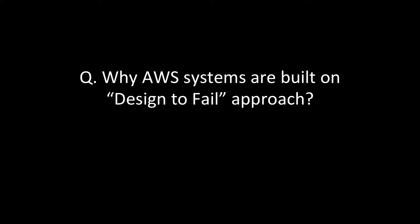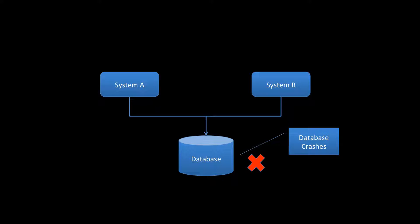One popular question is: why are AWS systems built on a design-to-fail approach? To understand the design-to-fail principle, consider an example where system A and system B are connected to a database — this database is a single point of failure. If the database crashes, the whole system comes down. So how will you design a system that can handle such a failure?